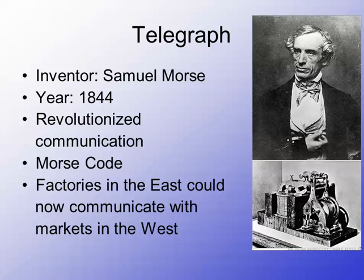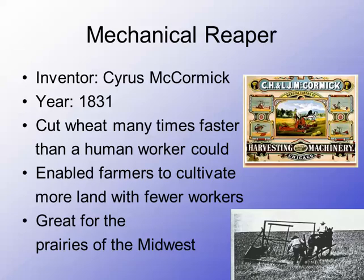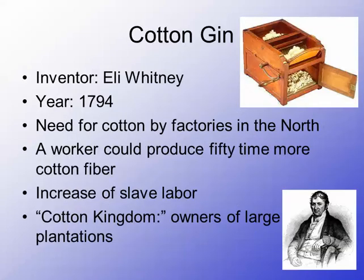Finally, we've got the telegraph, invented by Samuel Morse — there's a reason it's called Morse Code. It was invented in 1844, and this invention revolutionized communication, almost single-handedly putting an end to the Pony Express. It led to communication by different taps — a button would be tapped in different codes for every letter through short or long taps. Factories in the east could now communicate with markets in the west, making communication so much faster and more efficient. I hope you have a better understanding about how these inventions led to the development of our country as we kept pushing further and further west. Thanks for tuning in.